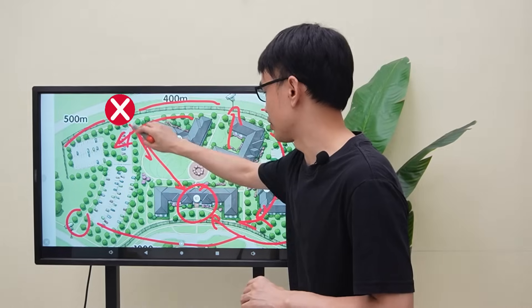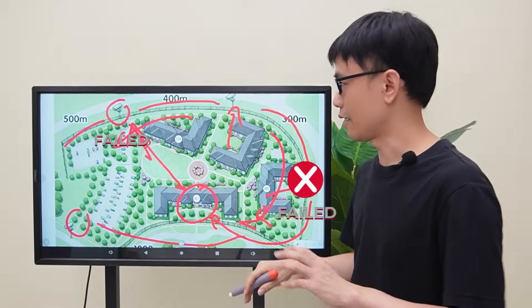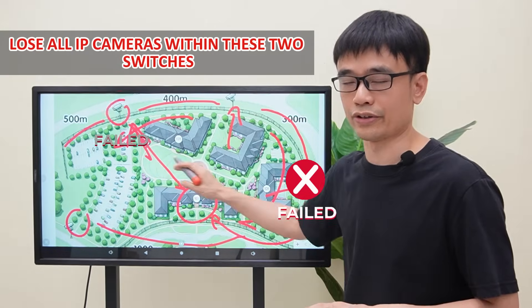Moreover, if two switches fail, such as these two outdoor switches going down, you will definitely lose all the IP cameras within these two switches.